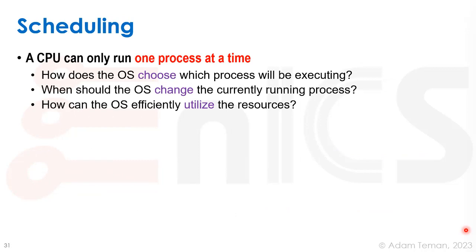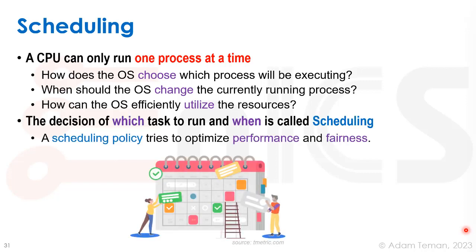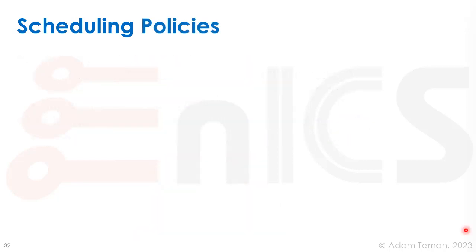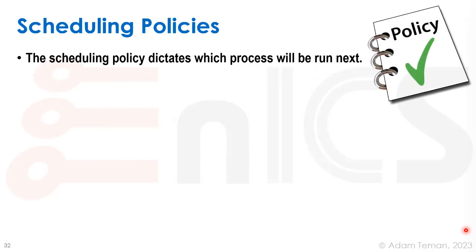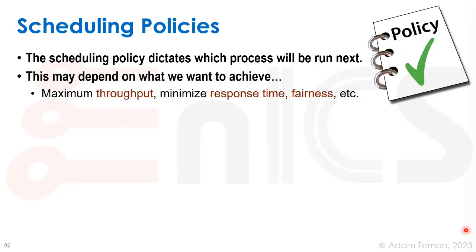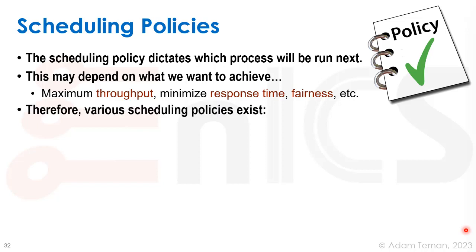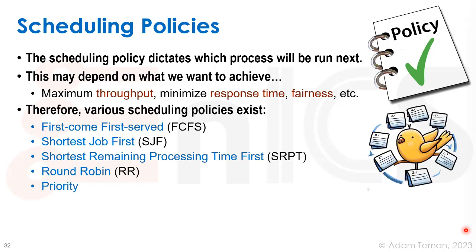A CPU can actually run only one process at a time. How does the operating system know which process will be executing, when to change the current running process, and how to efficiently utilize resources? The decision of which tasks to run and when is called scheduling. A scheduling policy tries to optimize performance and fairness for all processes wanting to run on limited resources.